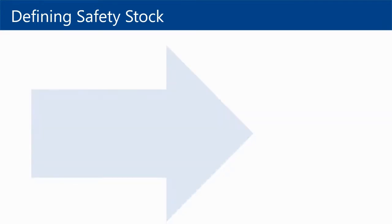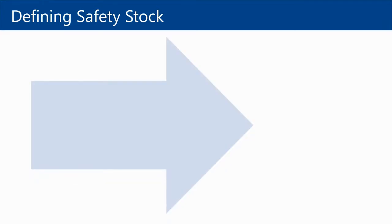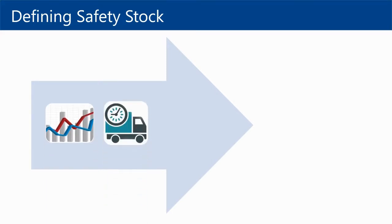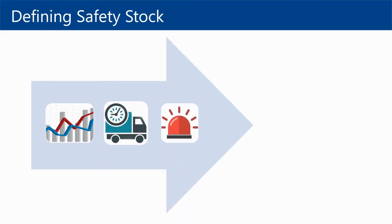What is safety stock? We can define safety stock as inventory that is kept as a buffer against mismatch between forecasted and actual consumption, between expected and actual delivery time, and for unforeseen emergencies.